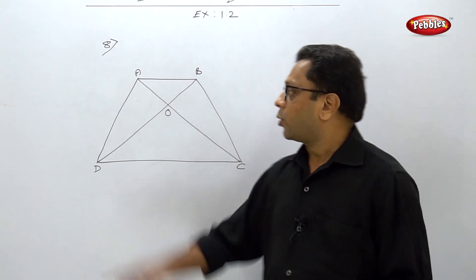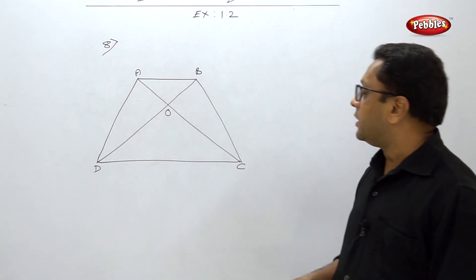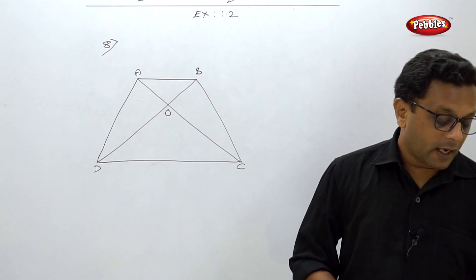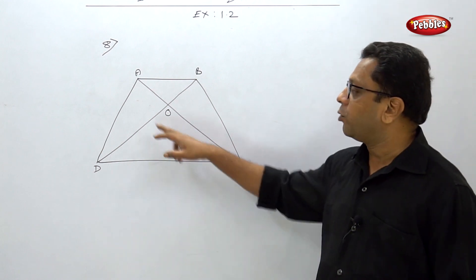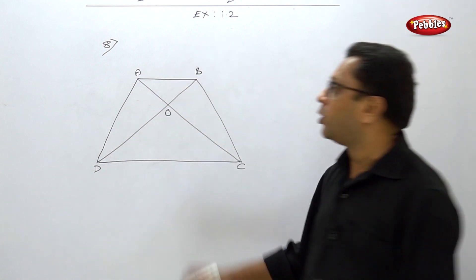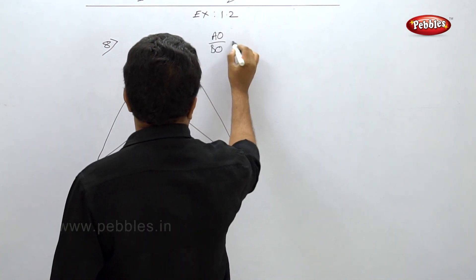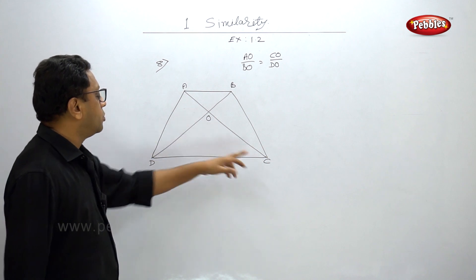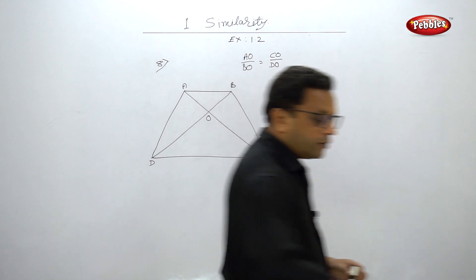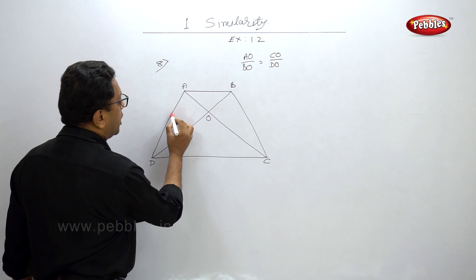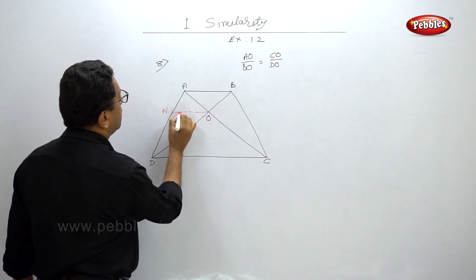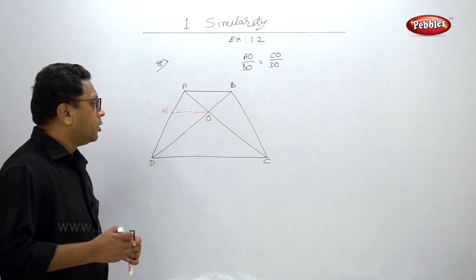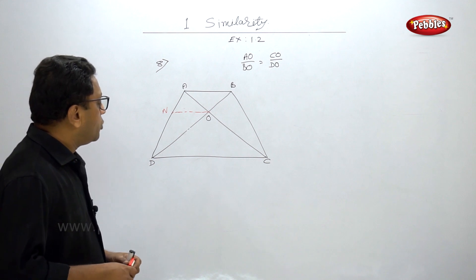Problem 8: ABCD is a trapezium in which AB is parallel to DC, and its diagonals intersect at point O. Show that AO/BO = CO/DO. For the construction, draw a line through O parallel to AB — since AB is parallel to DC, this line is also parallel to DC.